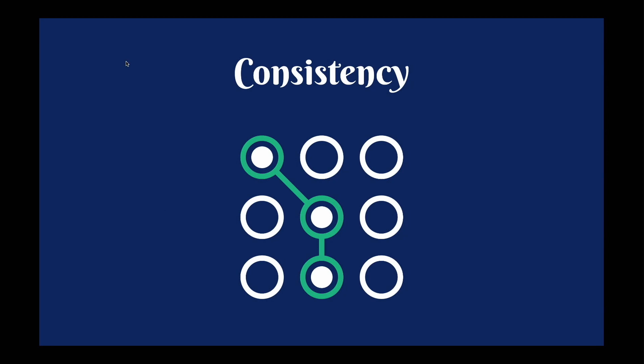Principle number one: consistency. Consistency comes in a few different flavors. We're going to talk about visual consistency — that's what everybody thinks of, the aesthetics of it. Functional consistency — the features, the functionality, the placement of those. As well as external consistency, one that probably doesn't get as much attention as it needs: how is your application consistent with everything else the user does in the world? And there are times where it's okay to bend those rules a little bit.